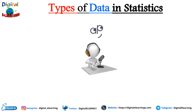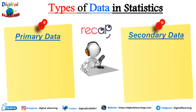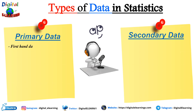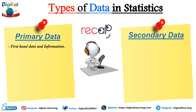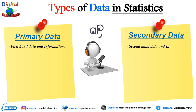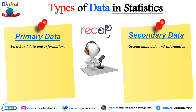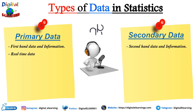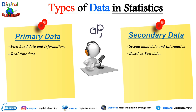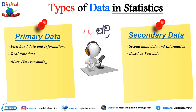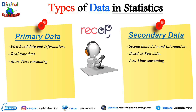Let's do a quick recap of primary data versus secondary data. Primary data is firsthand information with no prior research before it, while secondary data is mostly based on primary data research and is always second-hand data. Primary data is more real-time, while secondary data is based on past data. Primary data is more time-consuming because it is based on real-time studies, while secondary data is less time-consuming.